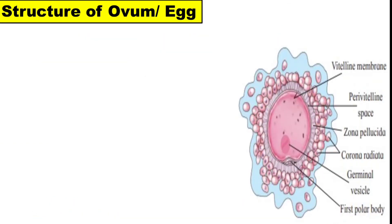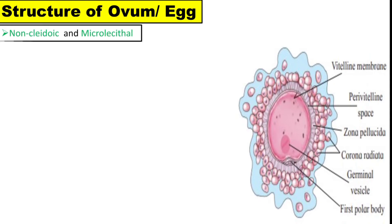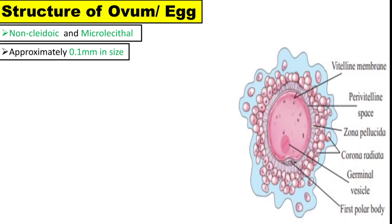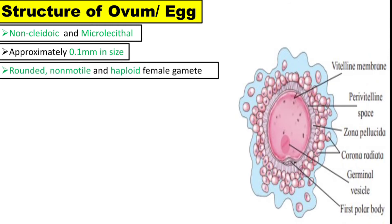Now let's talk about the structure of ovum, also called the egg. It is non-cleidoic and microlecithal — non-cleidoic meaning without a shell, and microlecithal meaning its yolk is present in very small quantity. It is approximately 0.1 mm in size. It is a rounded, non-motile, and haploid female gamete.